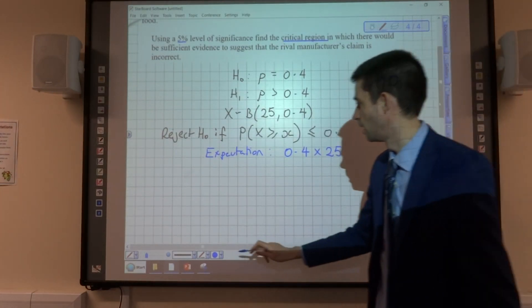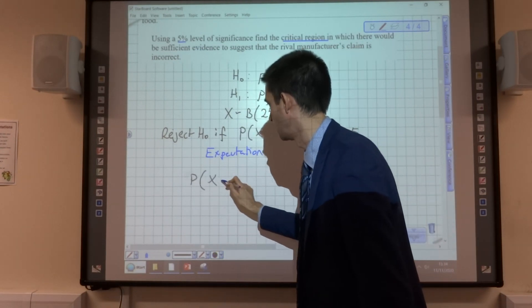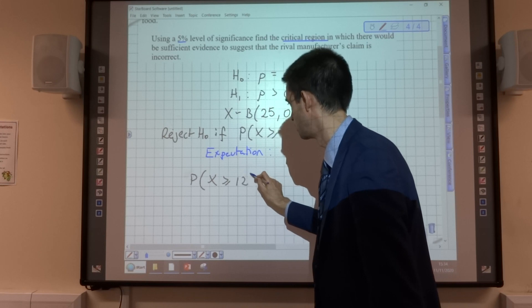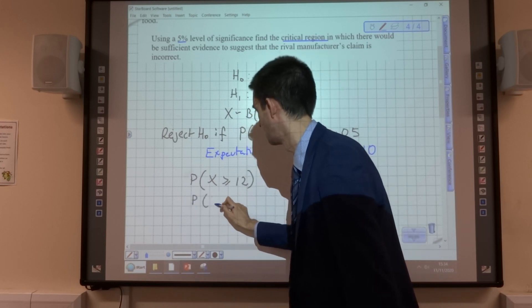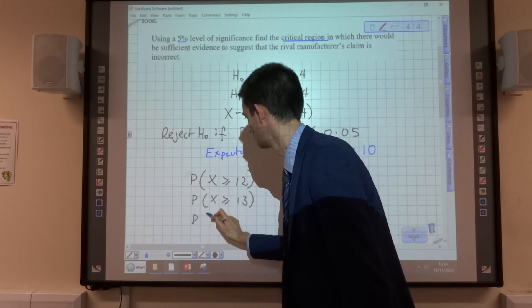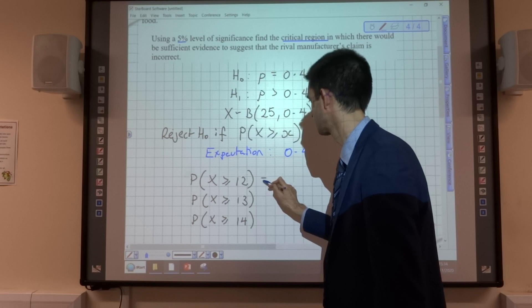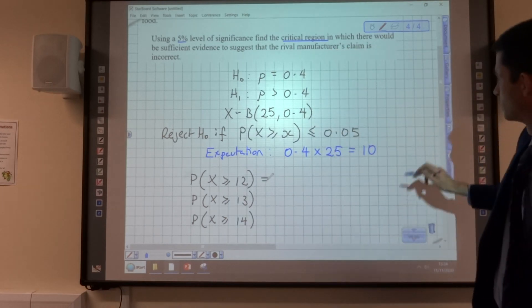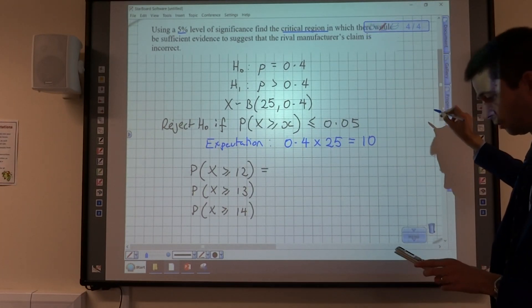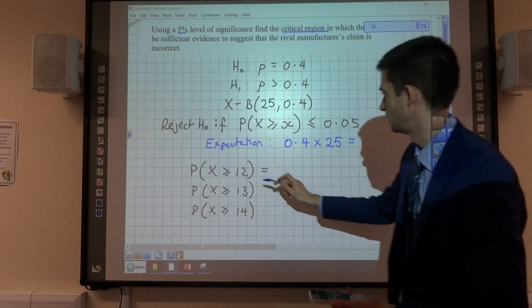So what I've done is I've used the list function on my calculator to calculate a number of results, which I'm just going to jot here. I've found the probability of being greater than or equal to 13, 14, 15.